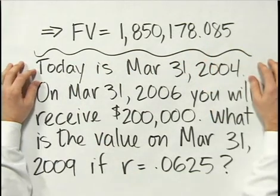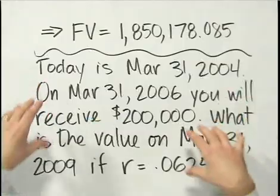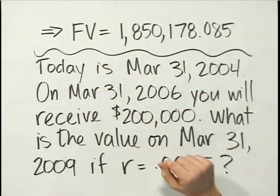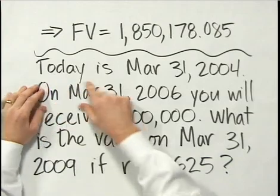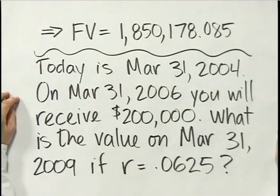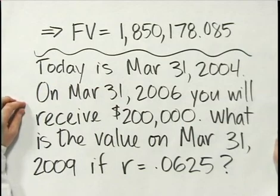Let's go to another time value of money problem. Today is March 31st, 2004. On March 31st, 2006, you'll receive $200,000. What's the value on March 31st, 2009 if the interest rate is 6.25%? This is another future value problem, except that the future is even after the occurrence of the cash flow. At this point, it's a good time to introduce the timeline — a graphical tool often used in time value of money problems to help figure out what's going on and how to solve them.